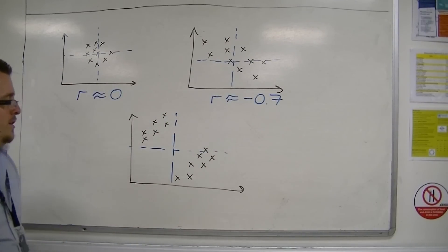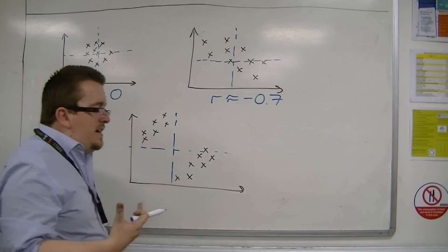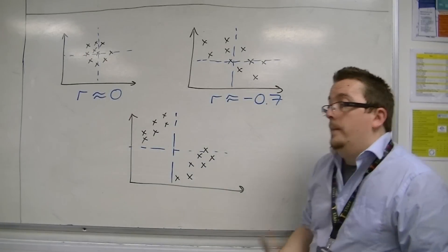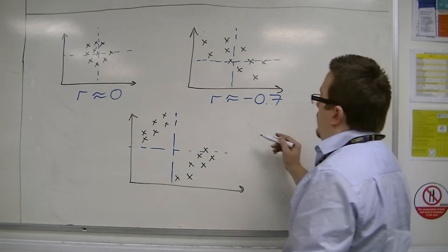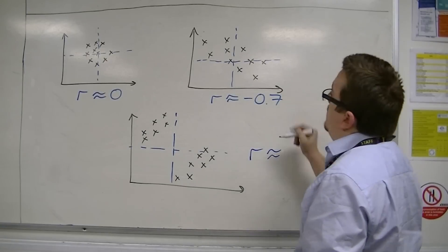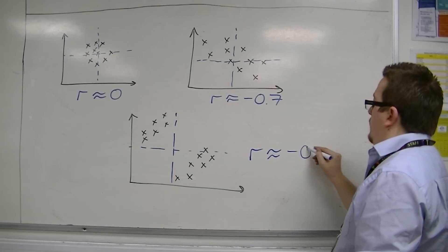So if we did the product moment correlation coefficient, it might not be suitable, but the kind of number that we would be getting would probably be quite similar to that one.